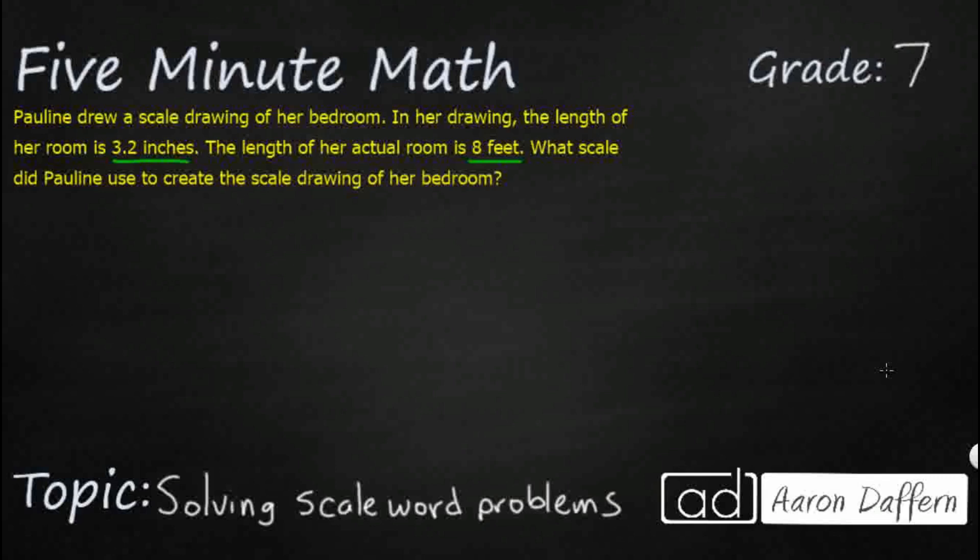Let's go ahead and at least put down the two numbers that we have right now. So we need the length. So we've got the length over length, right? So let's just go ahead and use this length over length. And so let's put her scale on top - 3.2 inches. And then let's put the actual on bottom, which is eight feet. Now, typically, we are going to have some type of scale. And we can usually put that over here on our other side, but we are usually given a third number. So what do we do in this case?